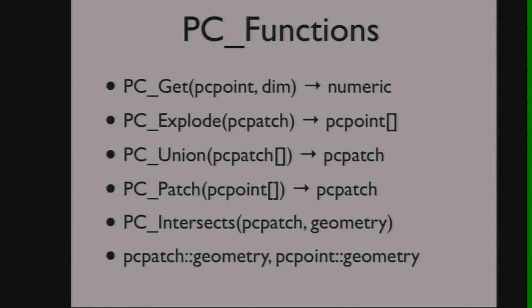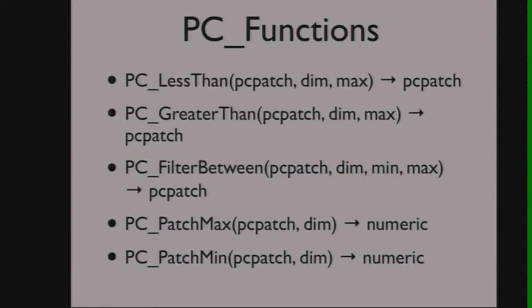That was the only slide I had when I first presented this — we now have even more functions, a lot of them for speed. You can now filter a patch to find all the values of a particular dimension that are less than a particular value. Threshold filtering is a really common use case in LiDAR — less than, greater than, between values. And it turned out that for efficiency, having the maximum, minimum, and average values stored in the header of the patch object made a lot of sense. You can also get summary statistics for each patch.